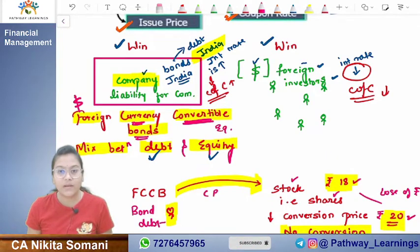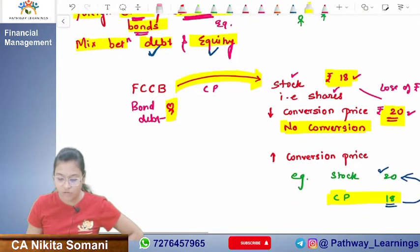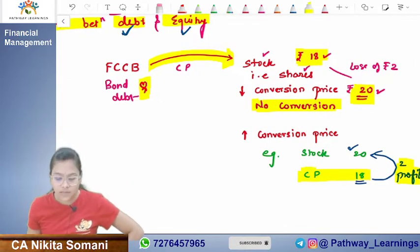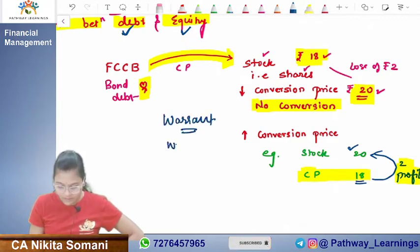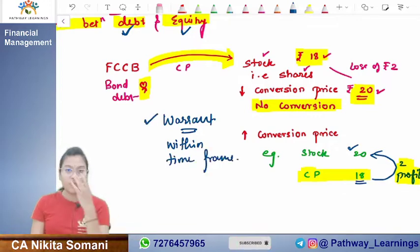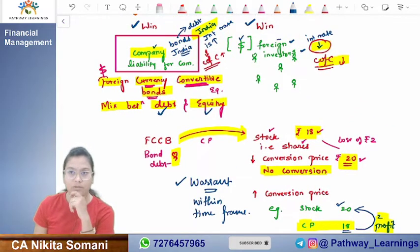Therefore it is a win-win situation for the company as well as the investor. Why win for the company? Because the interest rate is lower, so cost to company is lower. Why win for the investor? The investor gets the right to convert based on profitability — but this must be within the warrant time frame. That is the complete concept of Foreign Currency Convertible Bonds.